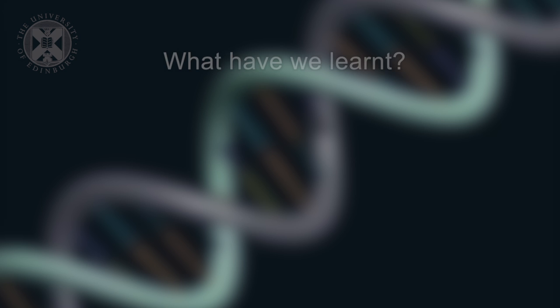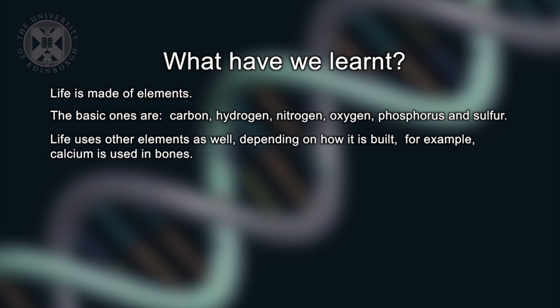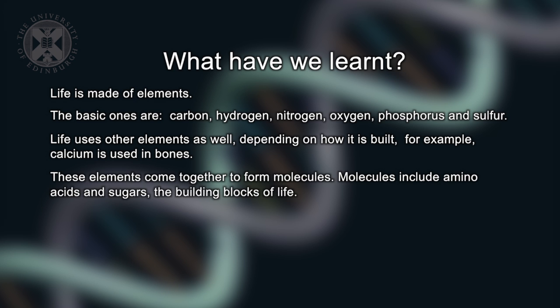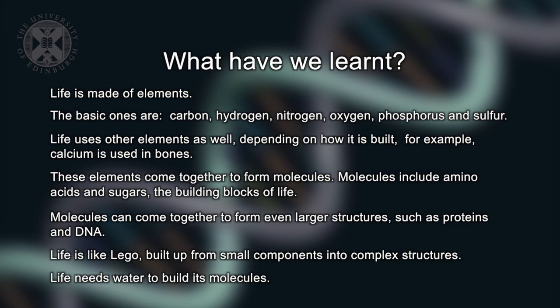What have we learnt in this lecture? We've learnt that life is of course made of elements. But it's made of very basic ones including carbon, hydrogen, nitrogen, oxygen, phosphorus and sulfur. And we've learnt that life uses other elements as well depending on how it's built, for example, calcium used in bones. These elements come together to form molecules, and molecules including amino acids and sugars are the building blocks of life. These molecules can themselves come together to form even larger structures such as proteins and complex sugars and other molecules such as DNA, deoxyribonucleic acid. We've learnt that life is a little bit like Lego. It's built up from small components into much more complicated ones. And we've learnt that life also needs water in order to carry out these biochemical reactions, these reactions to build up from elements to molecular building blocks and finally the complex structures that we think about as life.